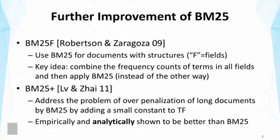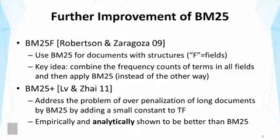The other line of extension is called BM25+. Here, researchers have addressed the problem of over-penalization of long documents by BM25. The fix is actually quite simple — we can simply add a small constant to the TF normalization formula. What's interesting is that we can analytically prove that by doing this small modification, we fix the problem of over-penalization of long documents by the original BM25. The new formula, BM25+, is empirically and analytically shown to be better than BM25.